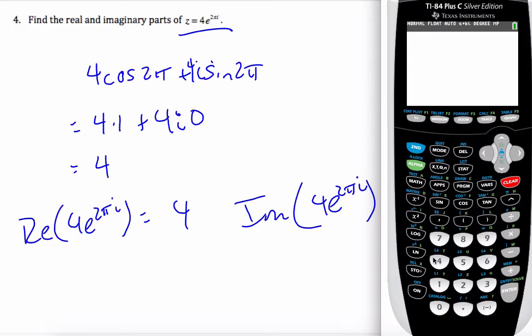Checking that with my calculator, I can go 4 times e to the 2πi, and you can see that it is 4 indeed.